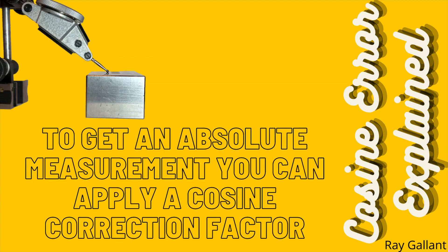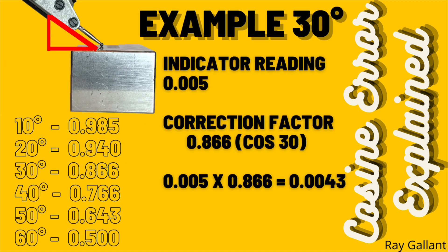Now if you do need an actual true measurement and can't keep your indicator arm parallel with the workpiece, you can apply the cosine correction formula. Here's an example: I have my indicator stylus or probe set to 30 degrees and my indicator reads 5 thou. The correction factor for cosine 30 is 0.866 — times 5 thou gives a corrected measurement of 4.3 thou. There's a chart with different correction factors for different angles, all derived using the cosine.